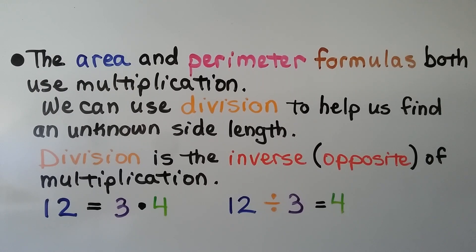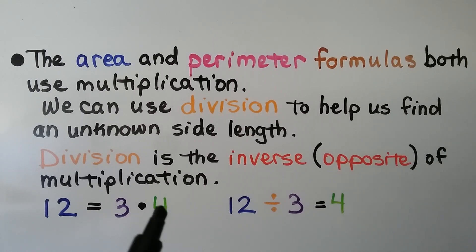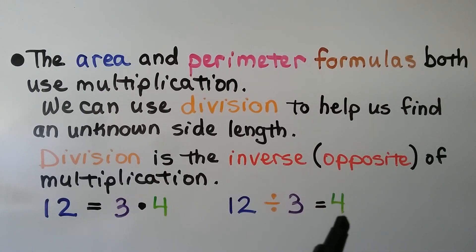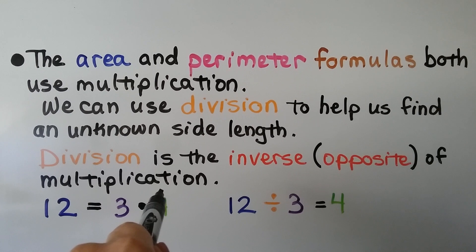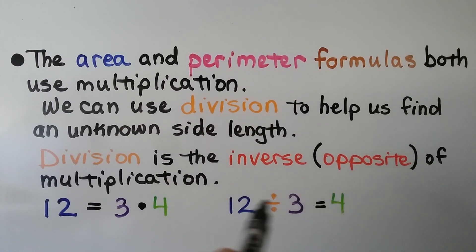The area and perimeter formulas both use multiplication. We can use division to help us find an unknown side length. Division is the inverse — the opposite of multiplication. So if we have 12 equal to 3 times 4, we can say 12 divided by 3 equals 4. If that 4 was missing, we would be able to find it by doing 12 divided by 3.